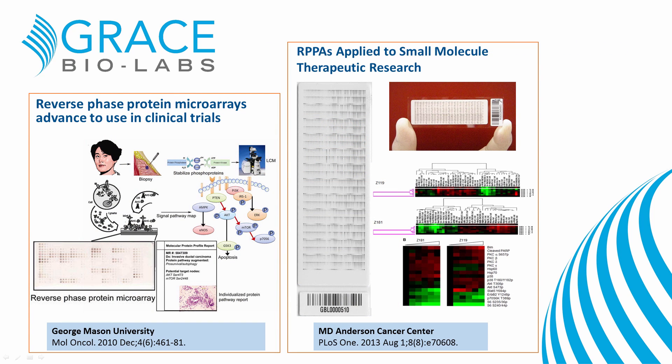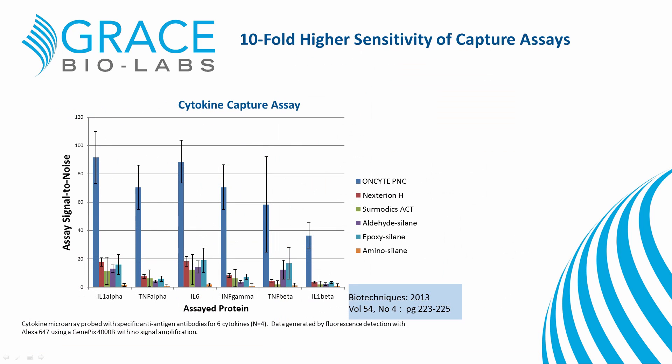This performance has made PNC films the surface of choice for RPPAs. Their use is growing rapidly in cancer research and drug discovery, and this technology has been validated for use in clinical trials. In addition to the high binding capacity, the ability of on-site PNC to preserve antigenicity makes it ideal for antigen capture assays. On-site PNC performs significantly better than any of these other microarray surfaces in functional capture assays. The improved signal-to-noise in this cytokine assay resulted in a 10-fold lower limit of detection over any of these other substrates.